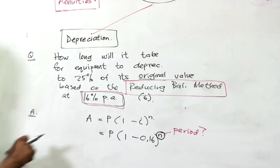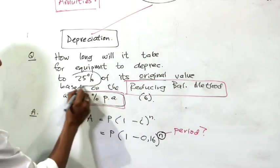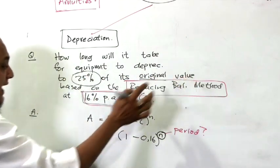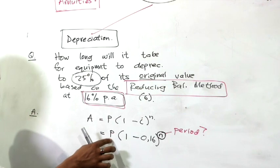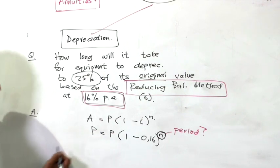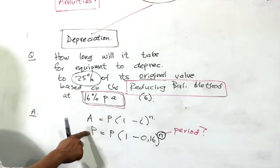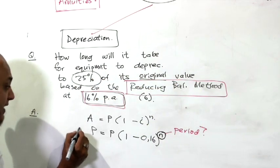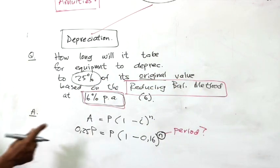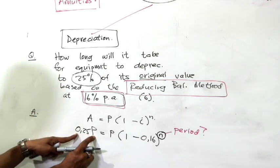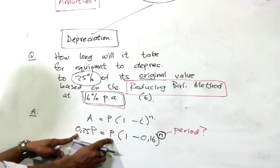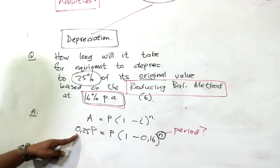Now, they say to 25% of its original value. They don't give us P. But obviously, if P is our original amount, 25% of its original value would be 0.25P. So the final amount would be 25% of the original amount equals the original into 1 minus 0.16 to the power n.